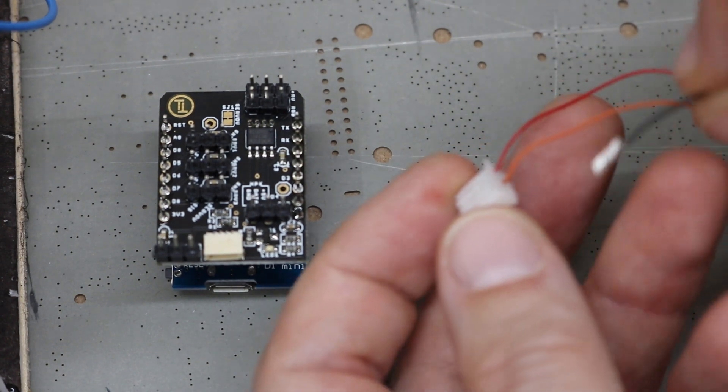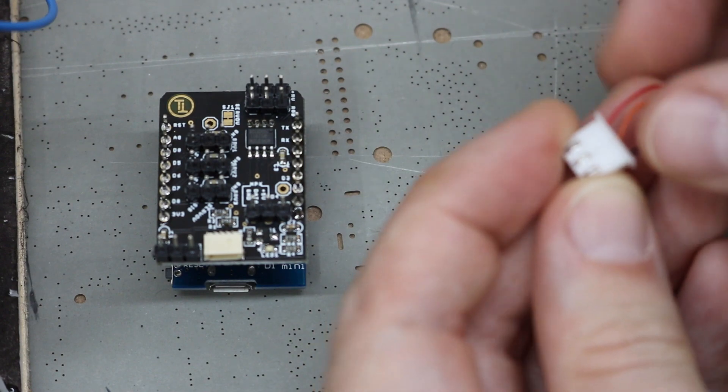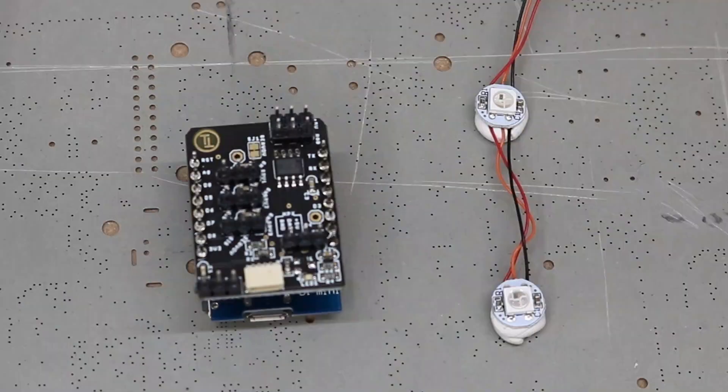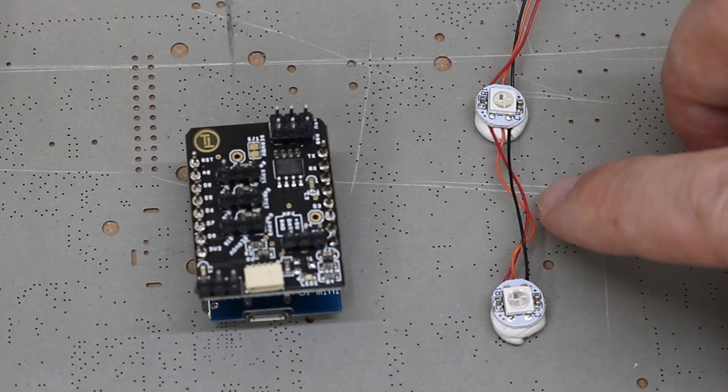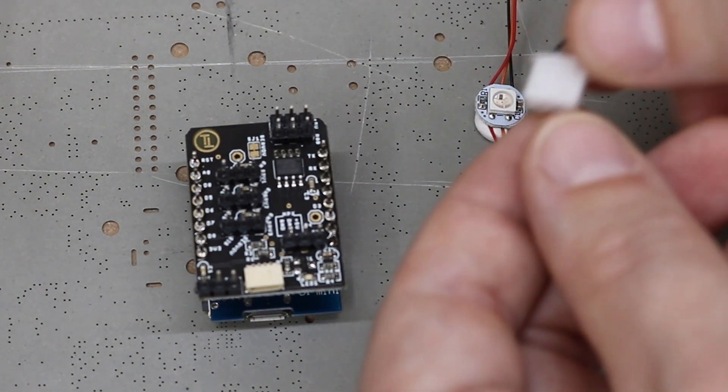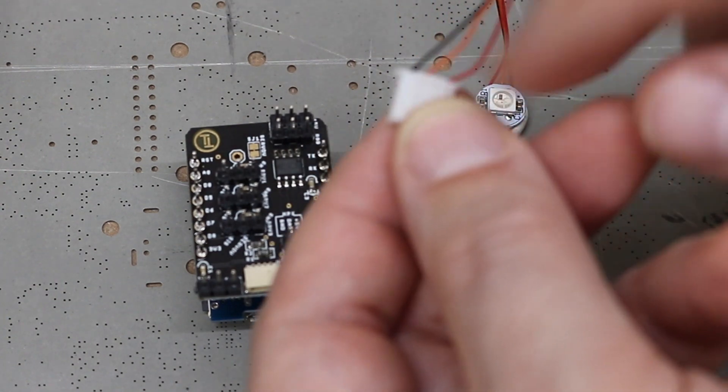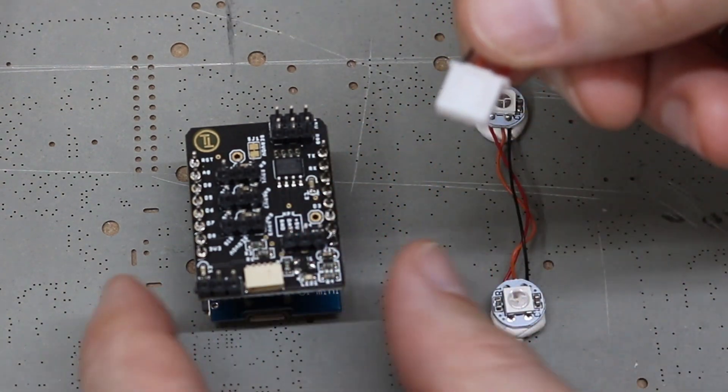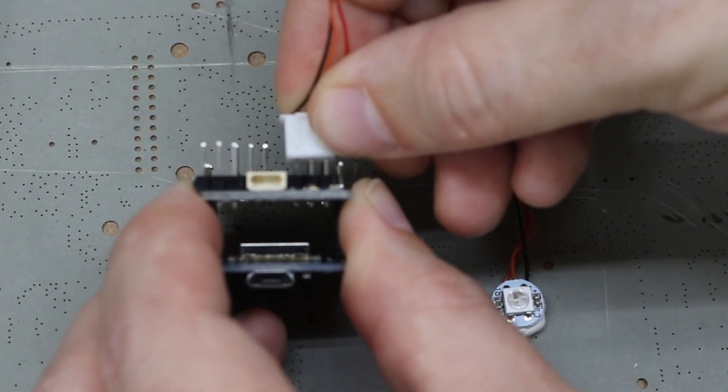And finally, time for the last crimp. Give that a little pull. And that's it. Now we've got all three cables in there. So we now have two of the NeoPixels wired with ground, data and power. And this connector here, which is now ground, data and power, I'm going to connect that directly into my Carnarvon Castle board.